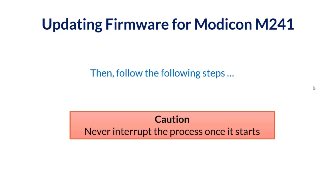Once the hardware setup is prepared, we will follow the steps I will explain to show how to update the firmware. Once you have started this process, please never interrupt it — if the process fails, you will not be able to program or use the PLC. So be careful: when you start installing the firmware, do not interrupt the process.